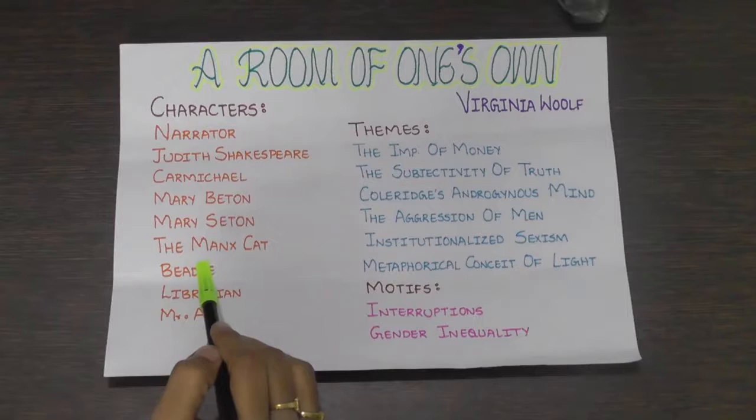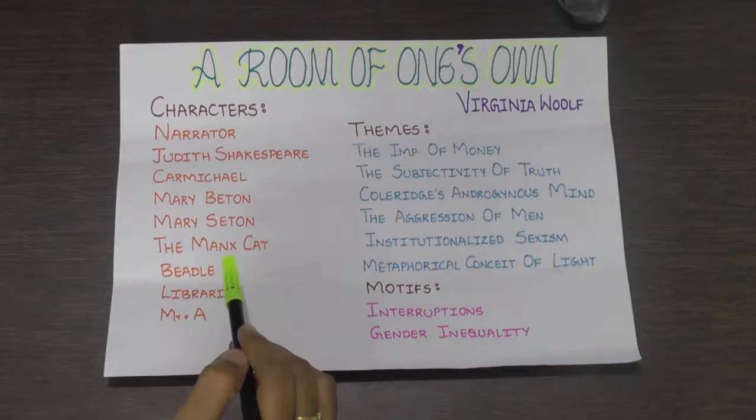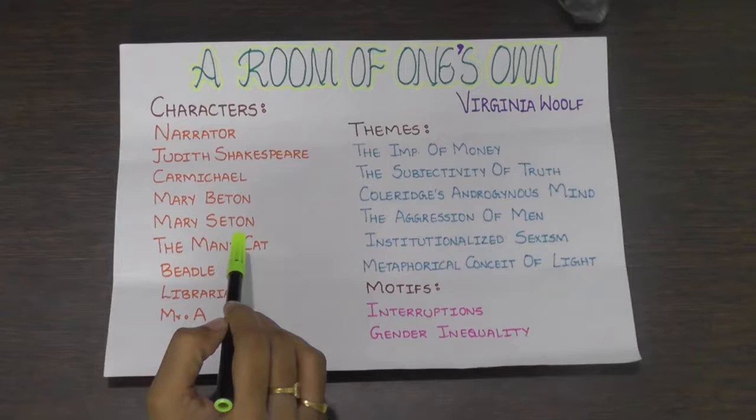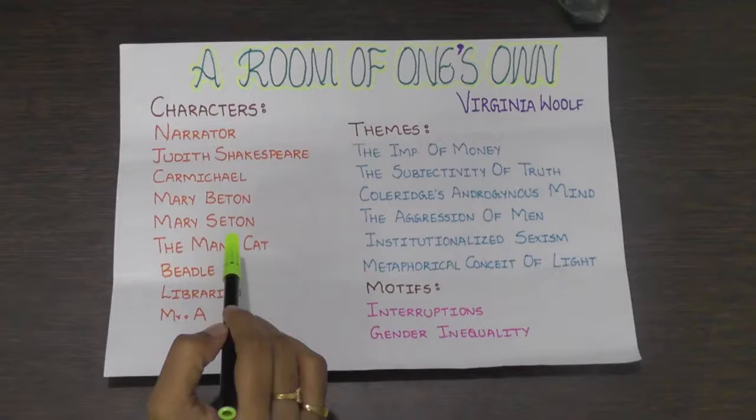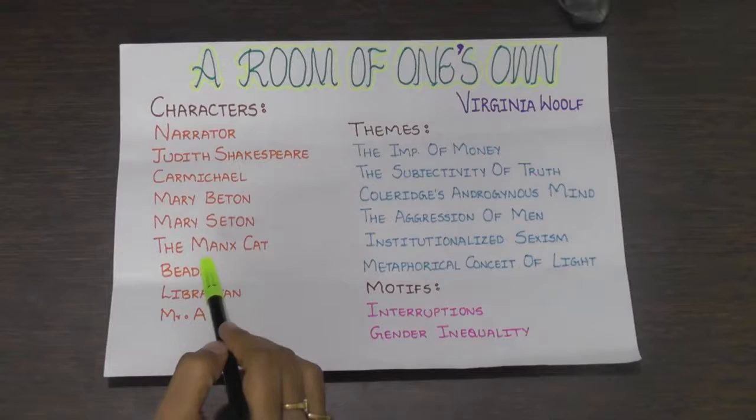The Manx Cat: The narrator sees a Manx cat on the lawn at Oxbridge. It reminds her of the few odd days in England when people seem to speak with more music in their voices. The cat without a tail may be a symbol of castration.